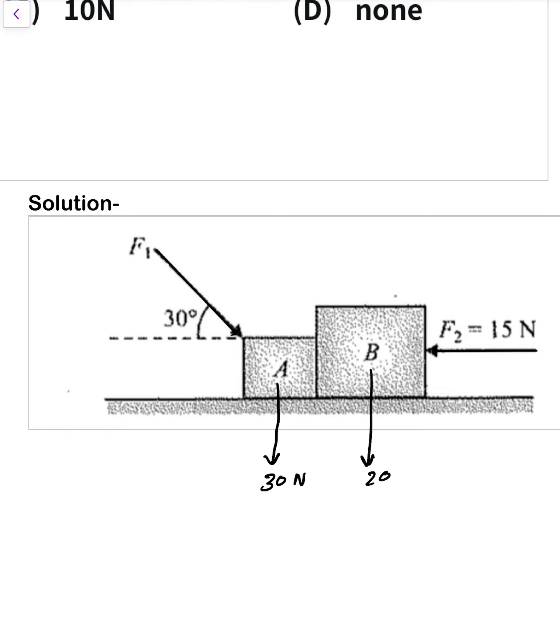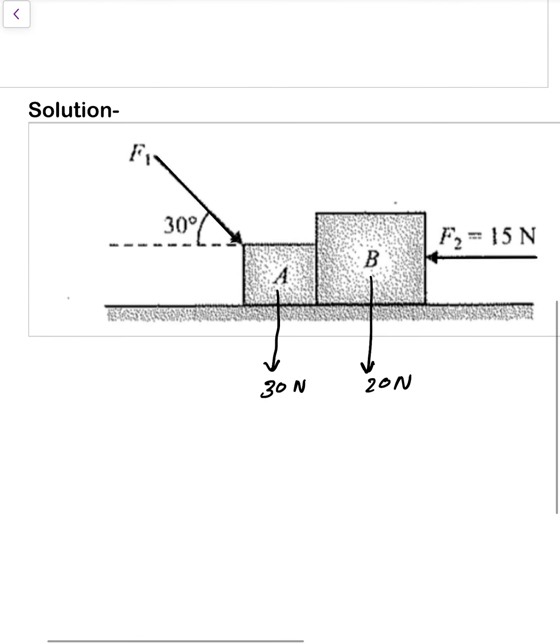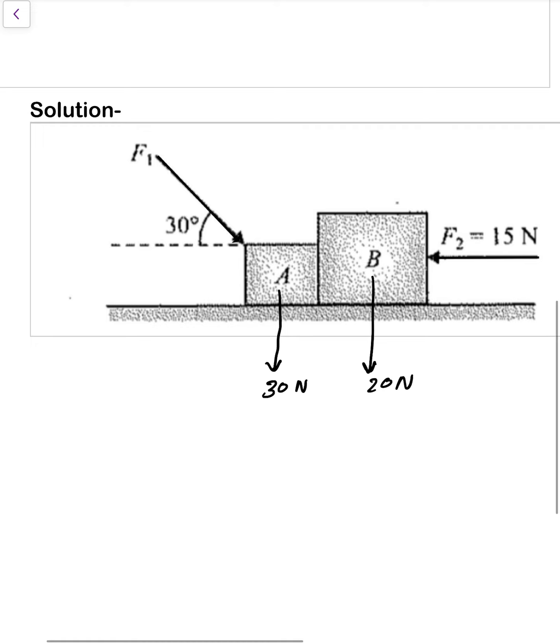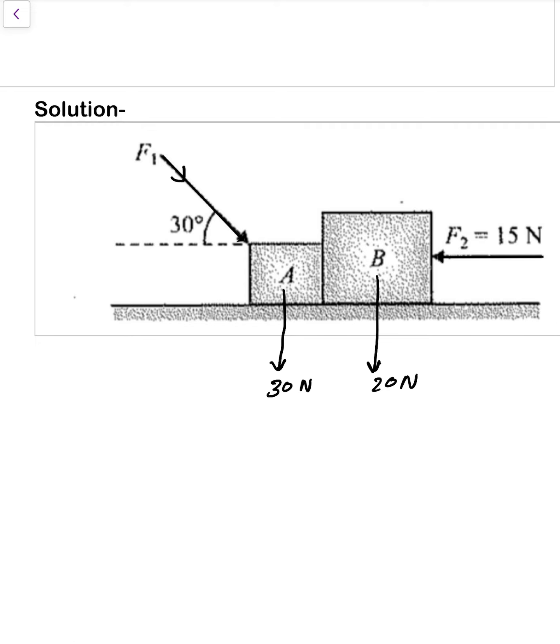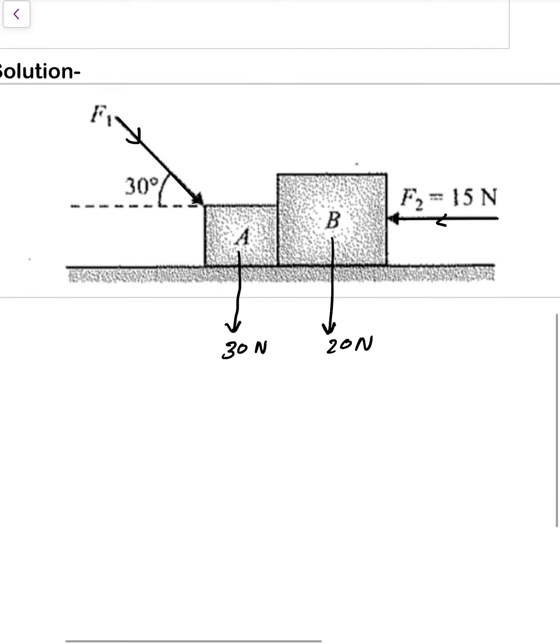According to the question, 30 and 20 Newton. Now F1 direction is this one. Components of F1 along x direction is F1 cos 30 degree. Along y direction that one is F1 sin 30 degree.